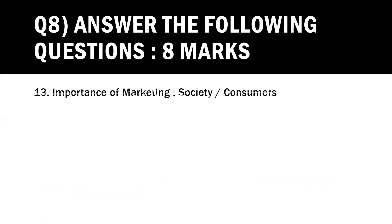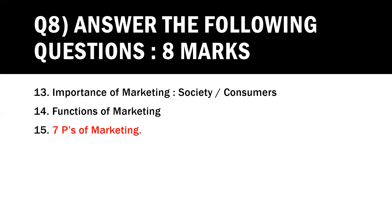Moving on: the importance of marketing towards society or consumers, and what are the functions of marketing — these are the next important questions. Also a very sure-shot question is the seven Ps of marketing — what are the seven Ps of marketing? So these are the important answers. Students, if you have prepared these, understand that you have covered the maximum portion, and whatever question comes from these topics, you have the matter ready to present in the board exam.